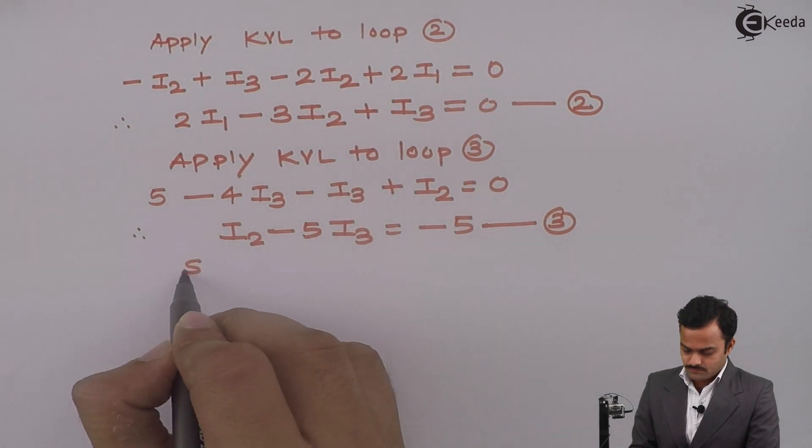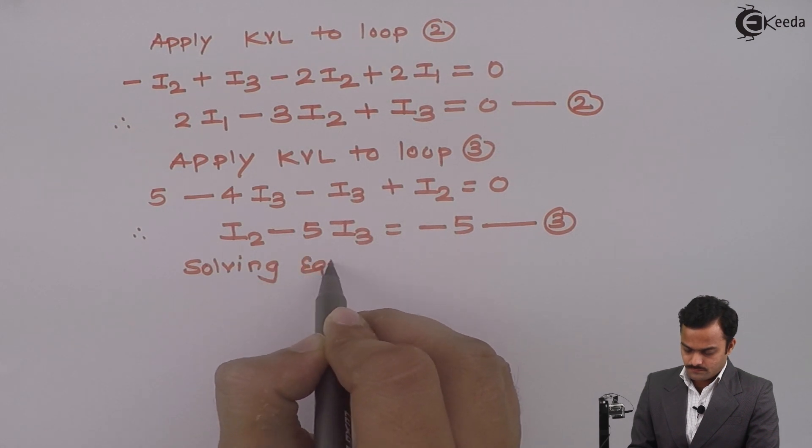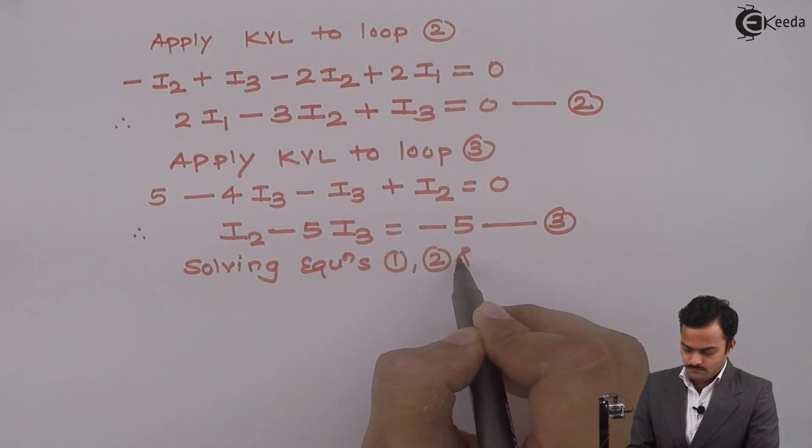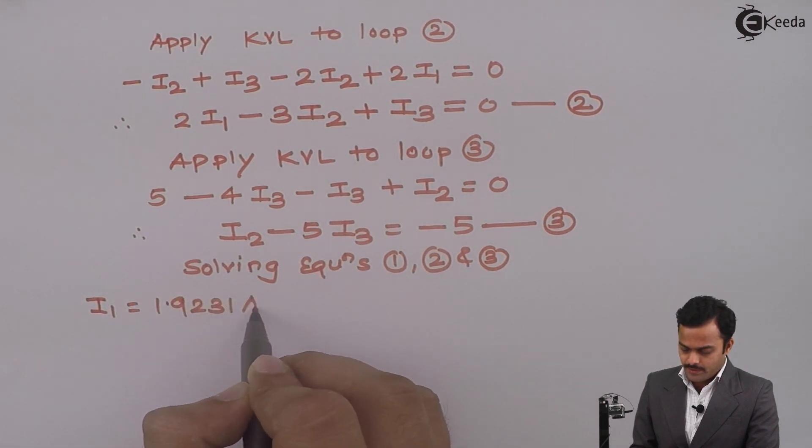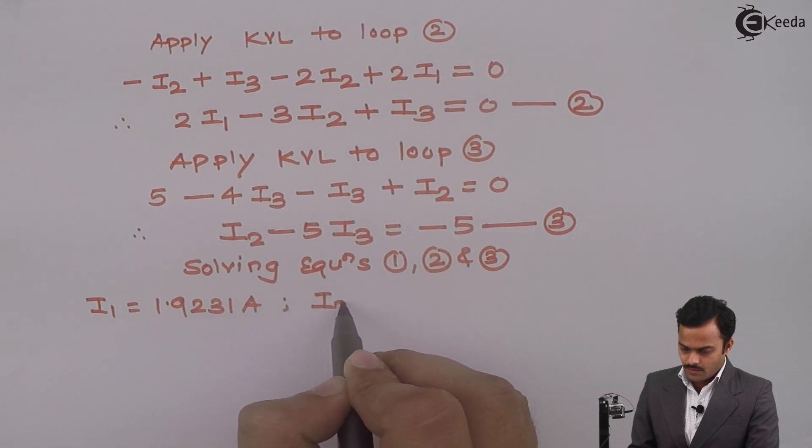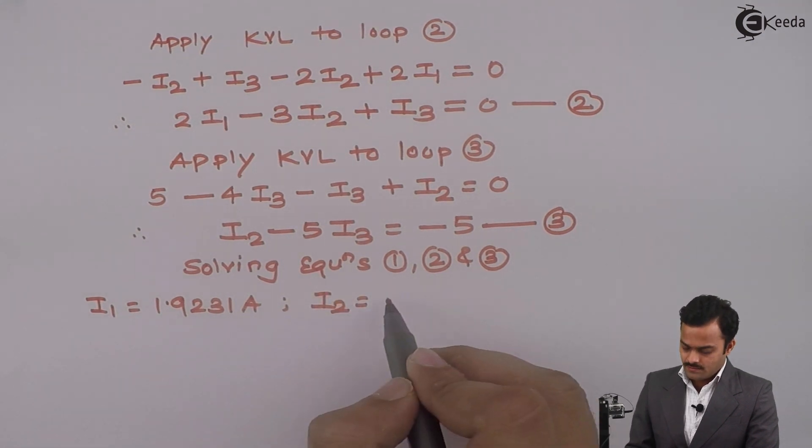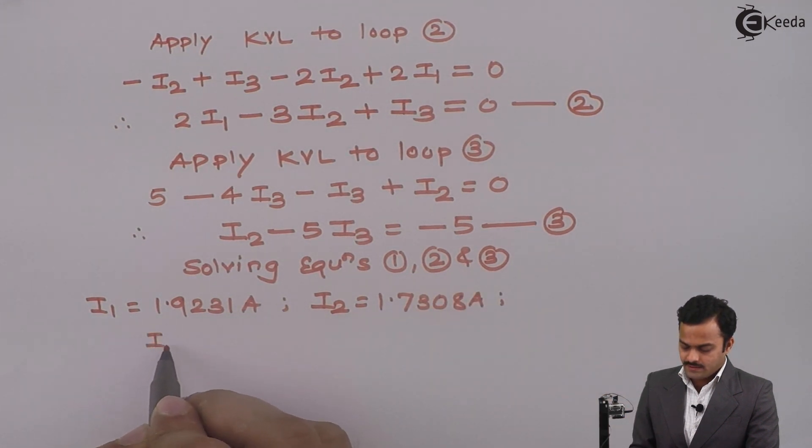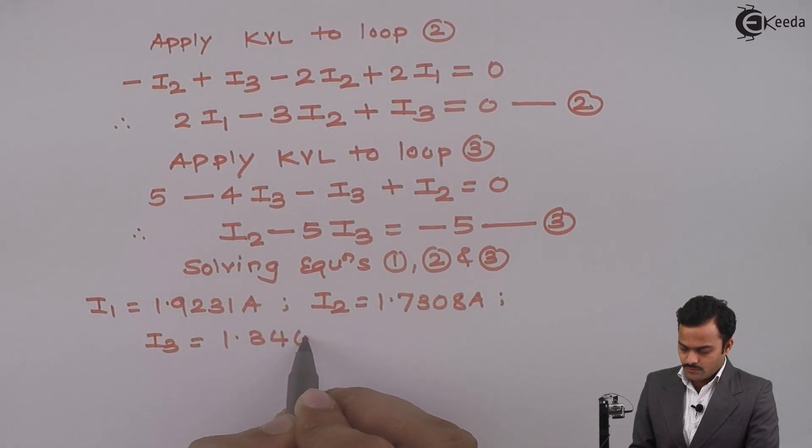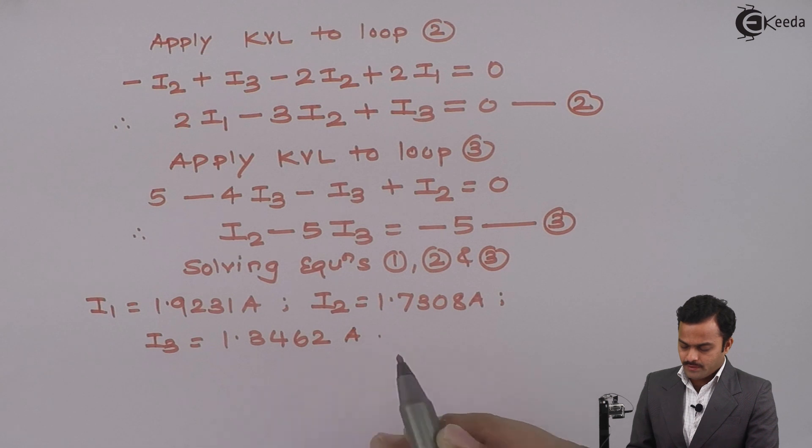If I solve all these three equations, I will get I1 as 1.9231 amperes, I2 as 1.7308 amperes, and I3 equal to 1.3462 amperes.